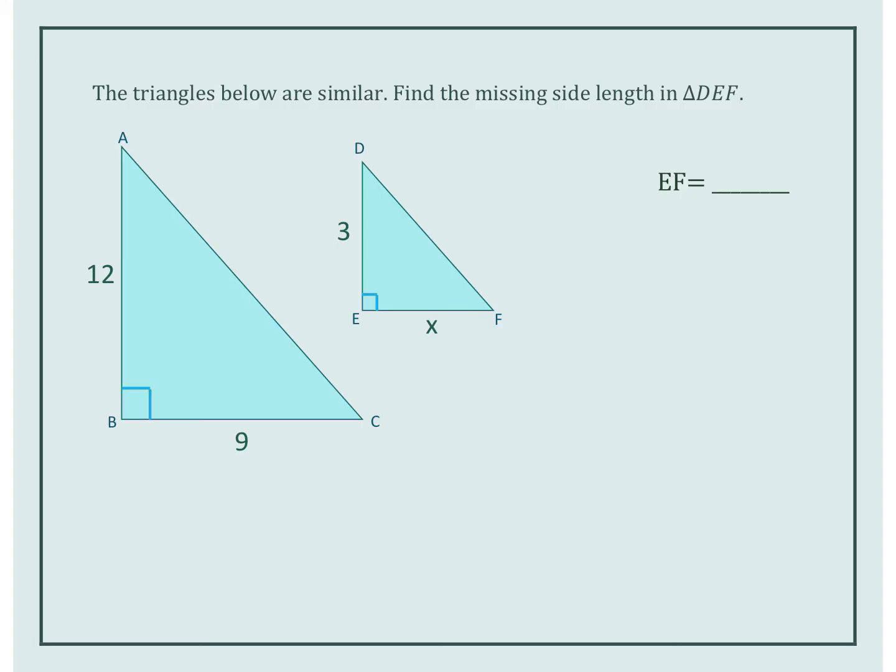If they're similar, we know that the sides are proportional and the angles are congruent. Triangle AB is going to be proportional to DE, and BC is going to be proportional to EF. So I'm going to set these up: AB 12 over 3 equals 9 over X.